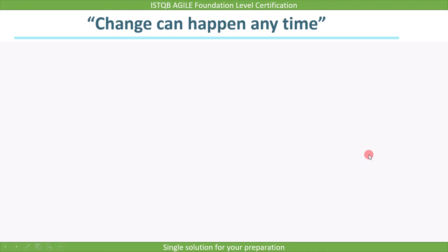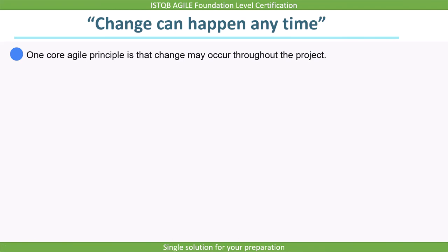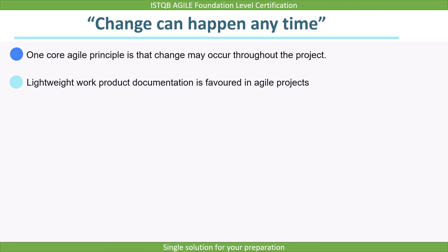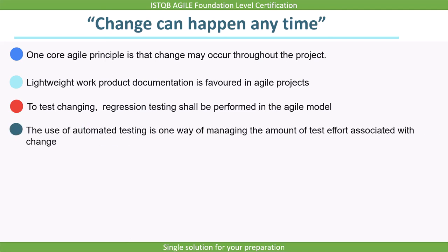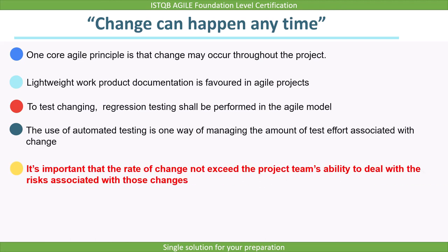An important point for testers in an Agile model is that change can happen at any time. One core Agile principle is that change may occur throughout the project. Therefore, lightweight work product documentation is favoured in Agile projects. To test for changes, regression testing shall be performed. The use of automated testing is one way of managing the test effort associated with change. However, it is important that the rate of change not exceed the project team's ability to deal with the risks associated with those changes.